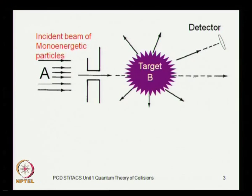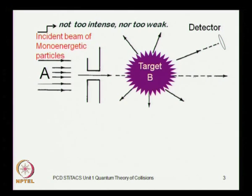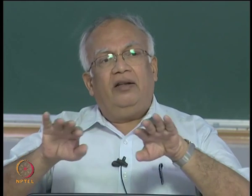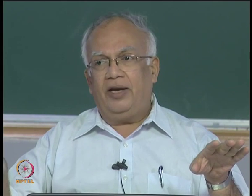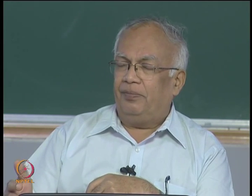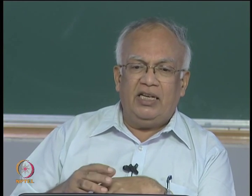Let us consider this process in further detail. The incident beam should be neither too intense nor too weak. If it is too intense — for example a mono-energetic beam of electrons — the particles will repel each other and collimation becomes very difficult. If it is too weak, there are too few events to observe and you cannot get adequate information. So the incident beam will be of moderate intensity.